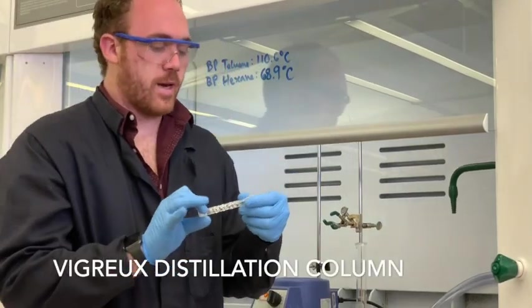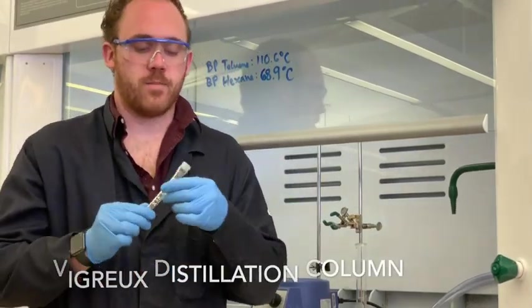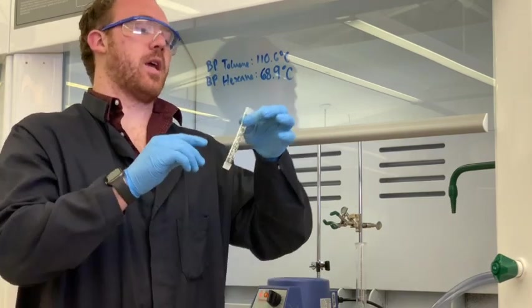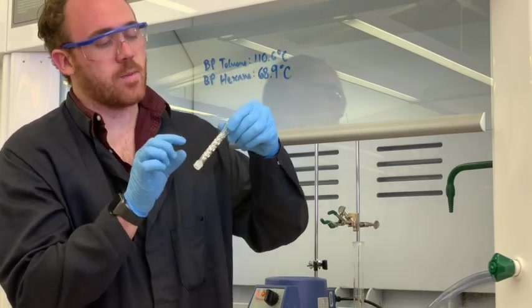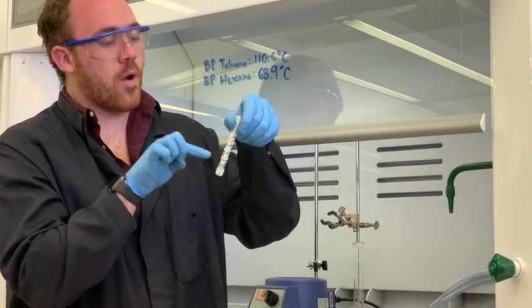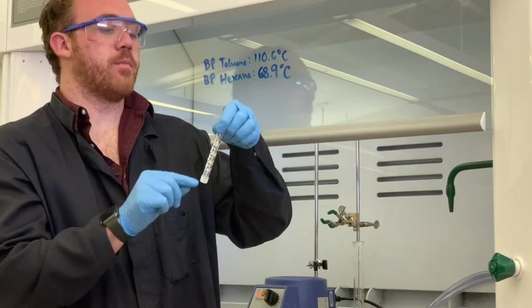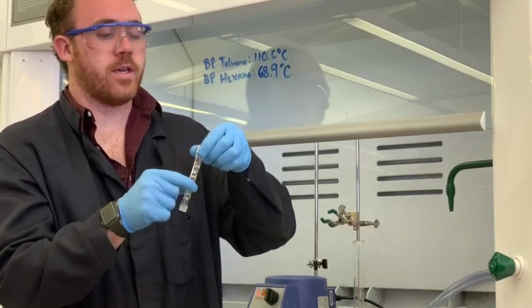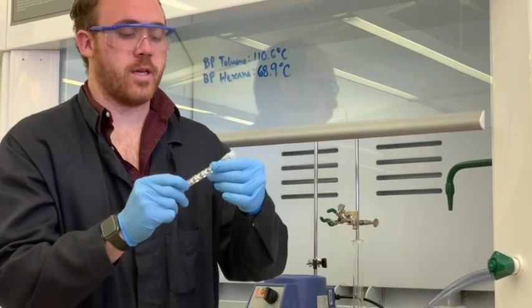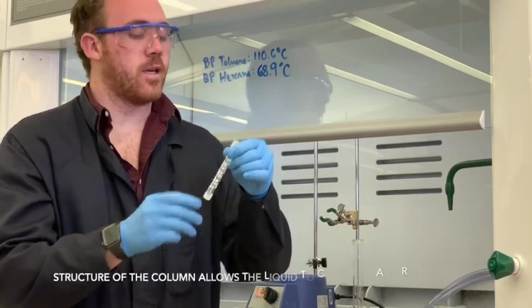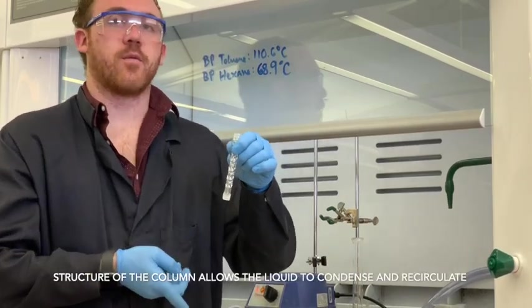For those of you who might not be familiar with a Vigreux column, it is essentially a glass column without any kind of jacket and it actually has small pointed prongs of glass sticking out into the middle space of the column. Those allow for condensation points for the mixture of solvents that you're distilling to drip back to the original container.